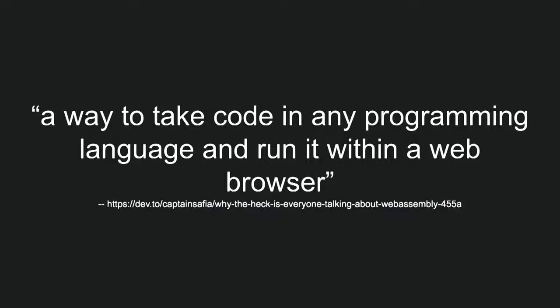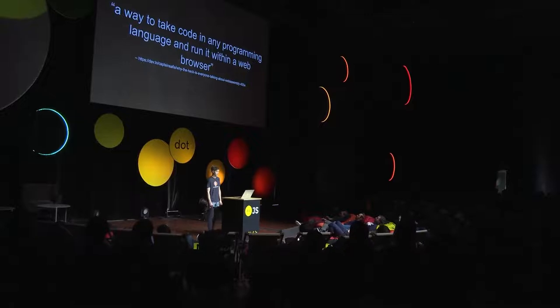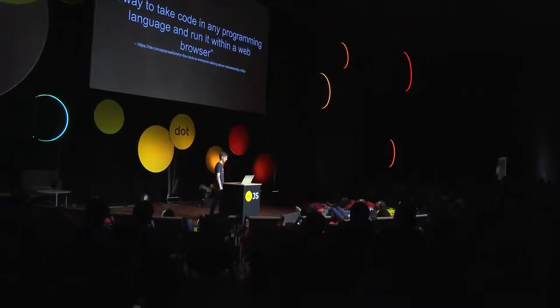I found this quote on the internet — it's quite accurate. WebAssembly is a way to take a programming language that isn't JavaScript, compile it to something, and that something can run in a web browser. It can also run in Node.js, or thanks to WASI now, it can run on a standalone implementation. So it can run pretty much anywhere, which is really neat. This also means that JavaScript doesn't have the monopoly on the web anymore — it's open to many languages now.